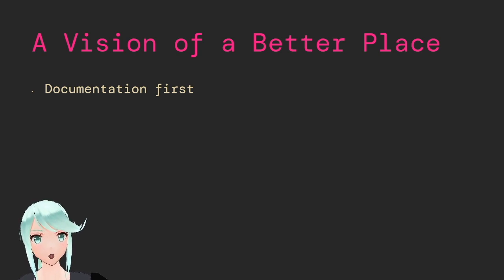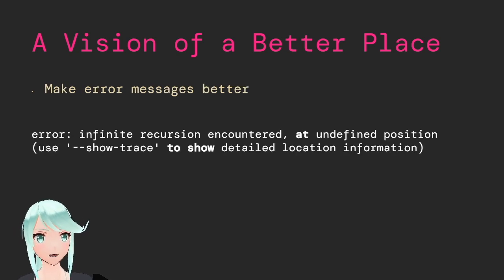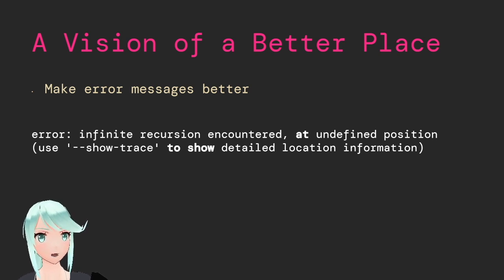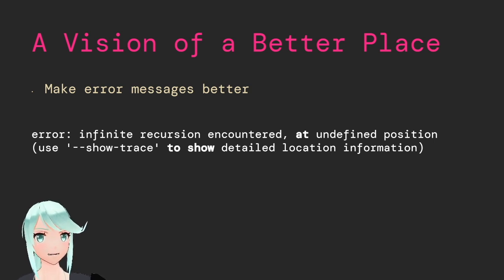There should be no module in the library of modules without documentation on how to use it and an example or two of where you'd use some of the weirder options. Error messages are also critical for understanding what's going on. Here is an example of an error message that I have encountered in Nix and NixOS a lot of times that has utterly baffled me every time. Adding the --show-trace flag does not show more detailed location information. In this case, I got it by sequencing a package import in the wrong place in a way that didn't seem obvious to me. Without better error messages, you just have no idea what's going on.